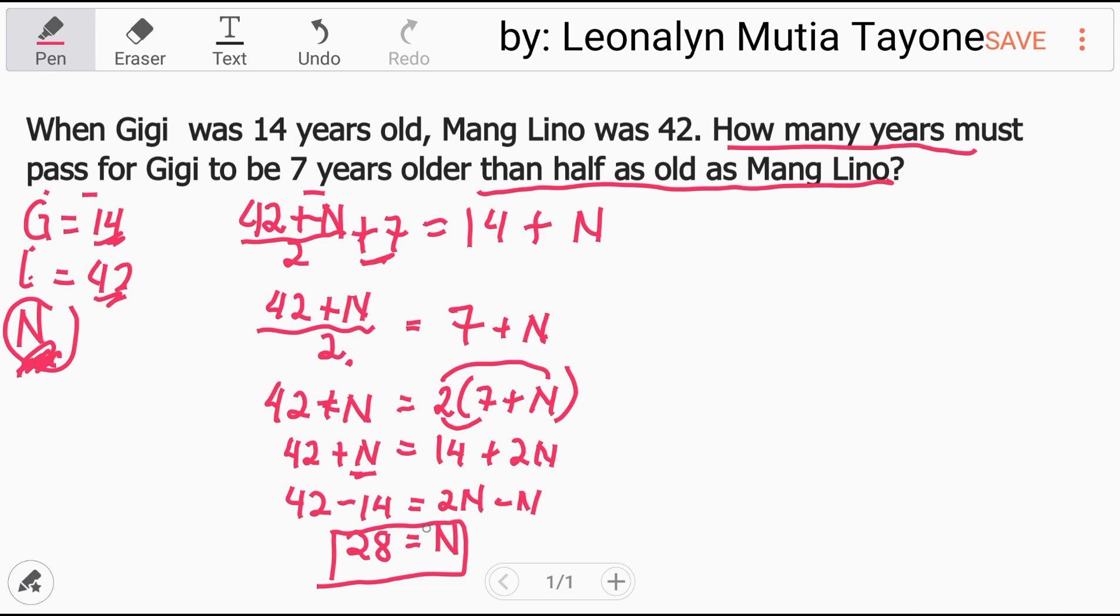Now let's double check. First, get Mang Lino's age after 28 years. Mang Lino is 42 plus 28, he will be 70 years old. Gigi is 14 plus 28, she will be 42 years old.